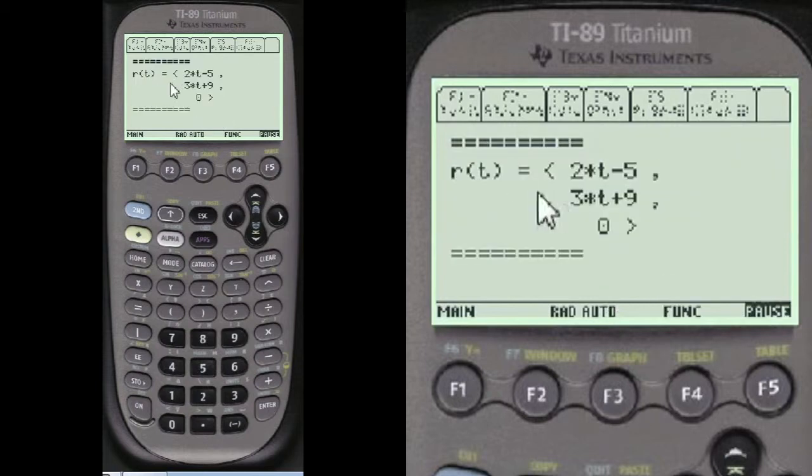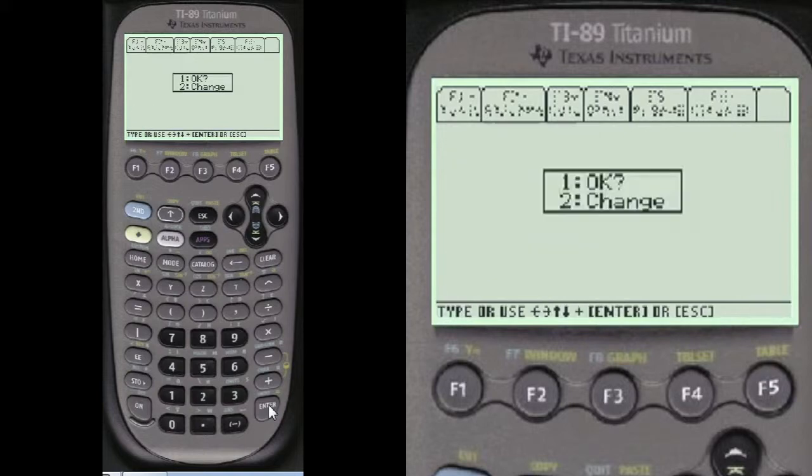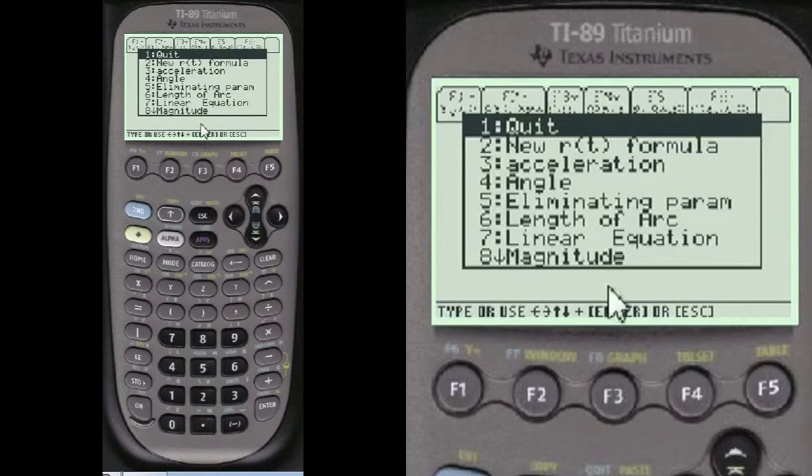I always show you what's there. This is a vector now. See these arrows make it a vector. It shows you that it is a vector. And I give you an option to change it if you made a mistake. We say it's okay here.